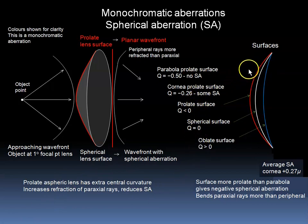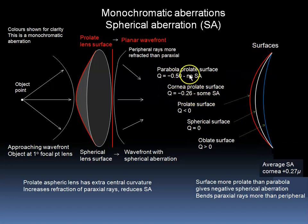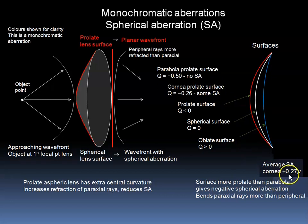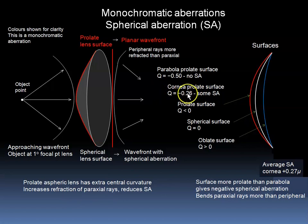Note that although the average cornea has a prolate surface, it has a prolate surface of minus a quarter, which is not quite enough — as in minus a half — to eliminate spherical aberration. So most corneas have some residual spherical aberration, typically in the range of plus 0.27 micron, which is the root mean square described on the previous slide. Try not to confuse the q-value of minus 0.26, which describes how prolate the surface is, with the spherical aberration that results, which is plus 0.27 micron.